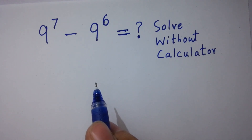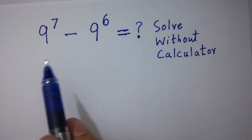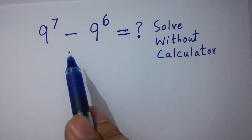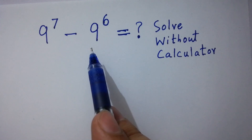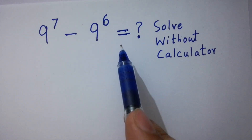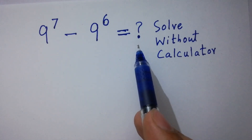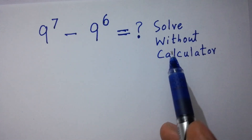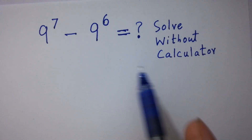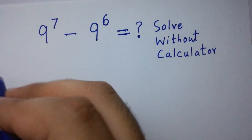Hello friends. 9 to the power 7 minus 9 to the power 6 equals what? Solve without a calculator. Let's have a solution.